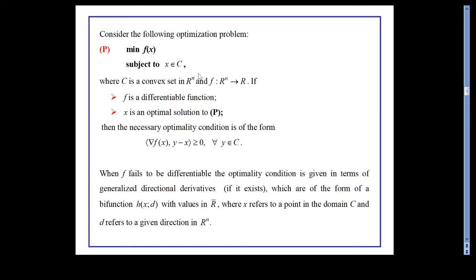Consider the optimization problem: minimize f(x) subject to x belonging to C, where C is a convex set in R^n and f is a mapping from R^n to R. If f is differentiable and x is a solution, the necessary optimality condition is that the inner product of the gradient of f(x) with y − x is ≥ 0 for all y in C. This is exactly of the form of the VIP with capital F(x) being the gradient of f(x).